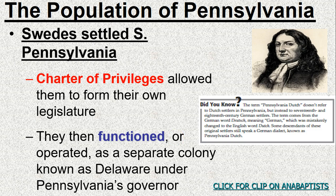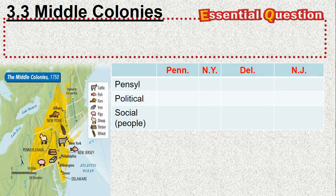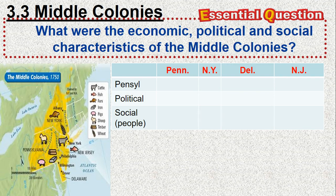The Swedes had settled in southern Pennsylvania and a Charter of Privileges allowed them to form their own legislature. Over time they gradually functioned as a separate colony known as Delaware, though they operated under Pennsylvania's governor but had their own autonomy and independence.